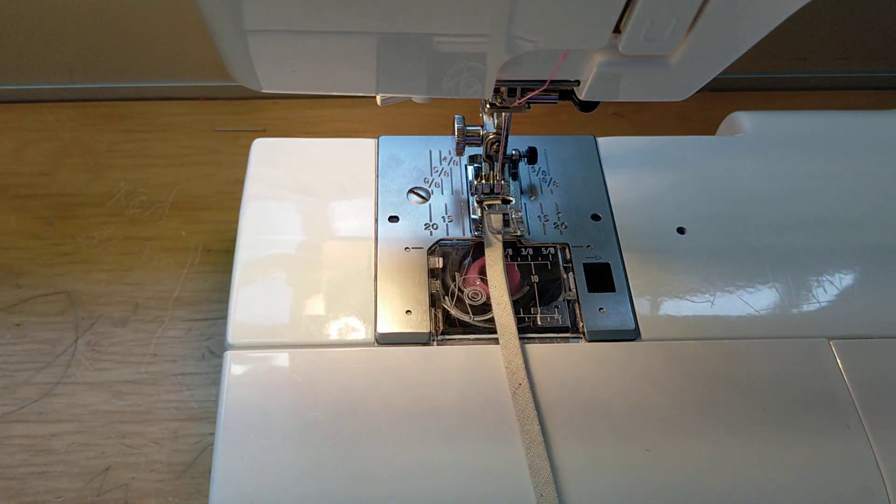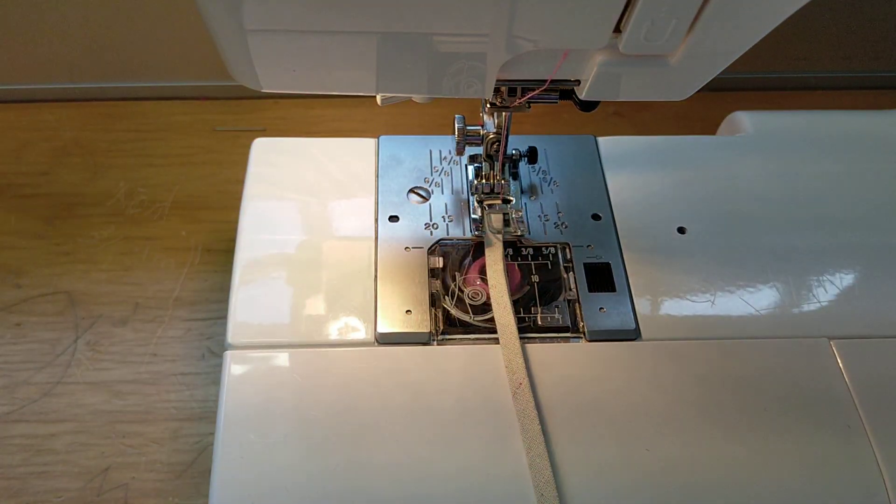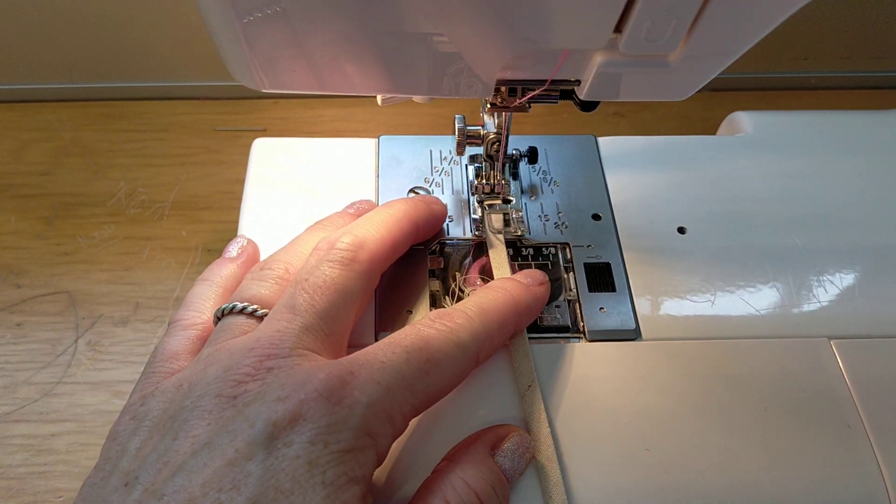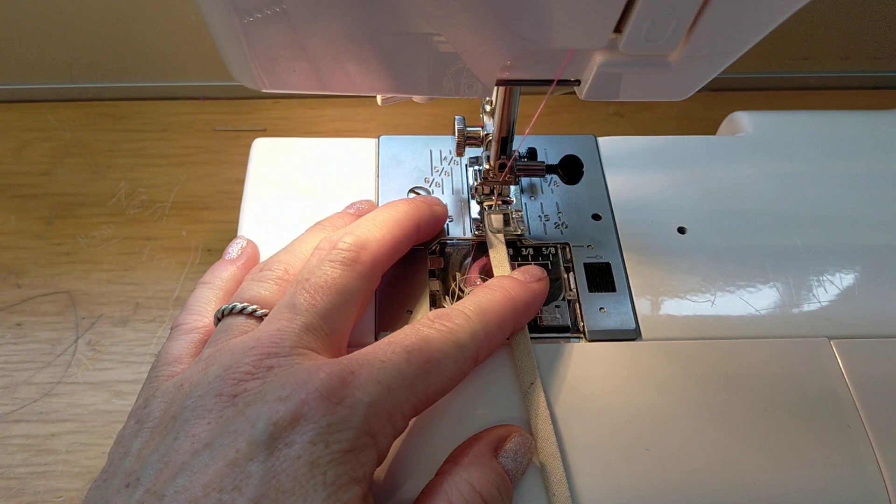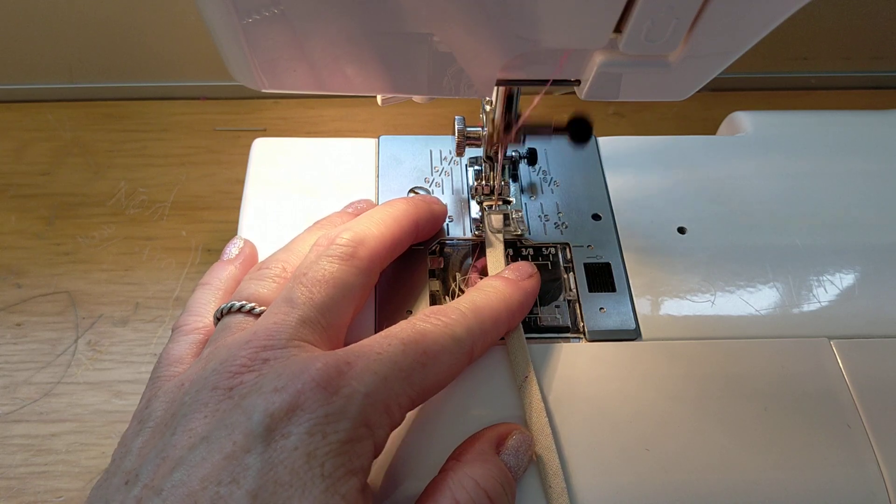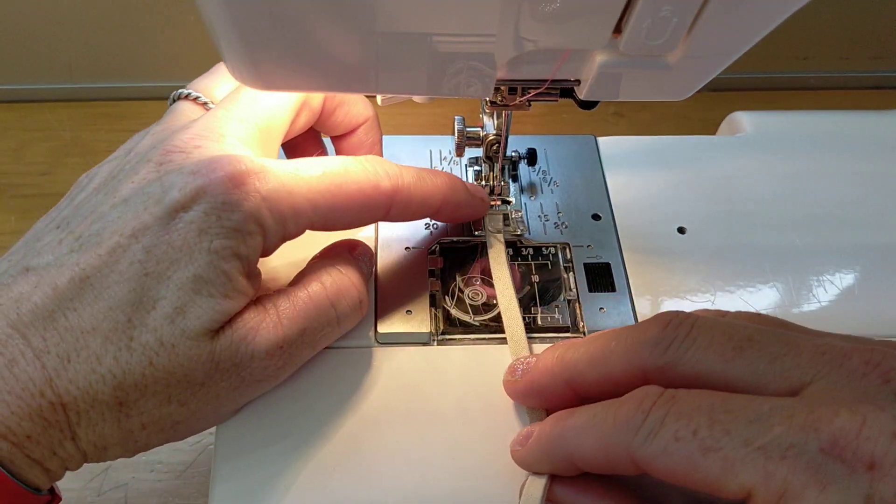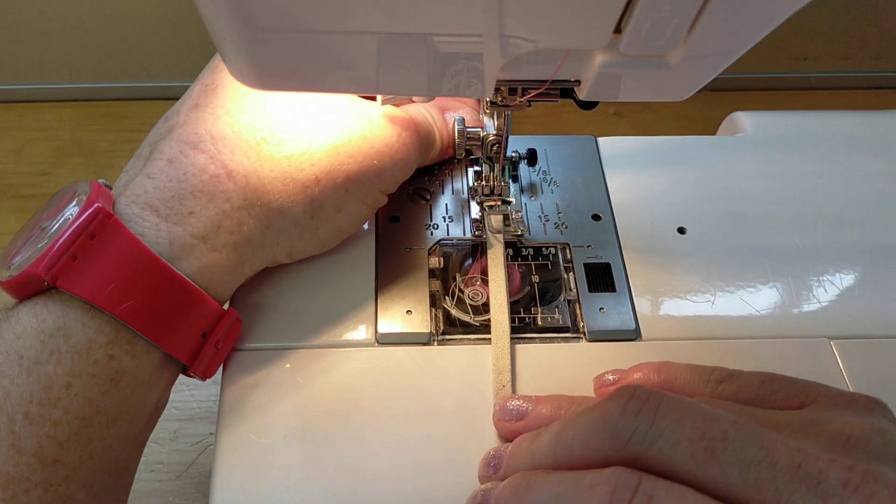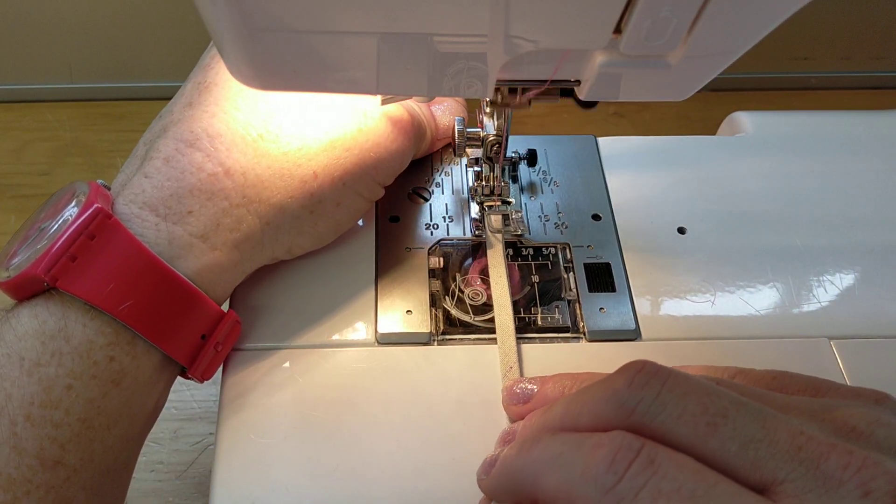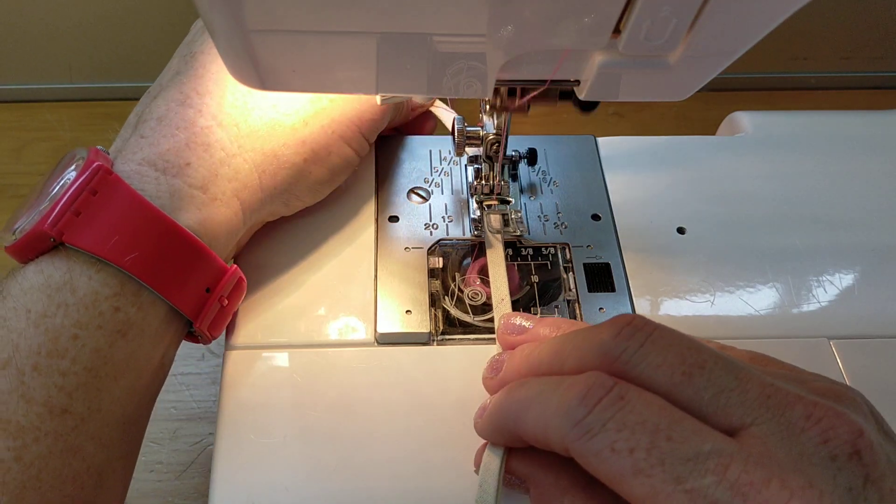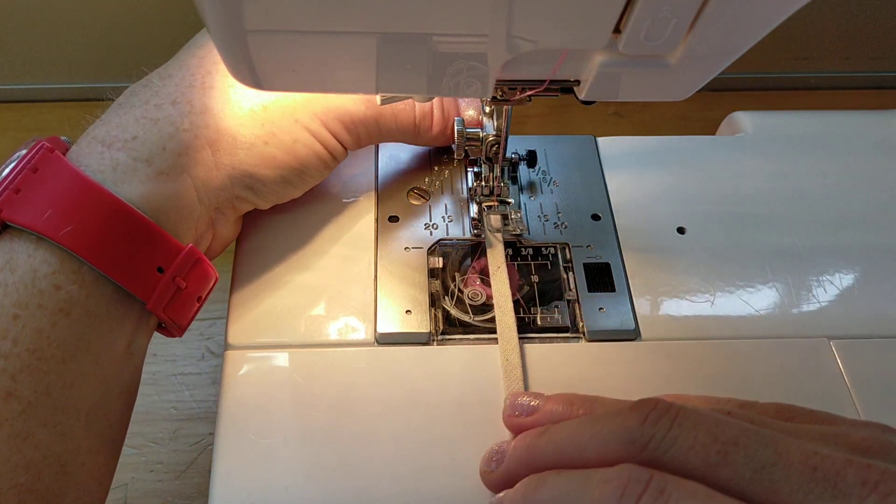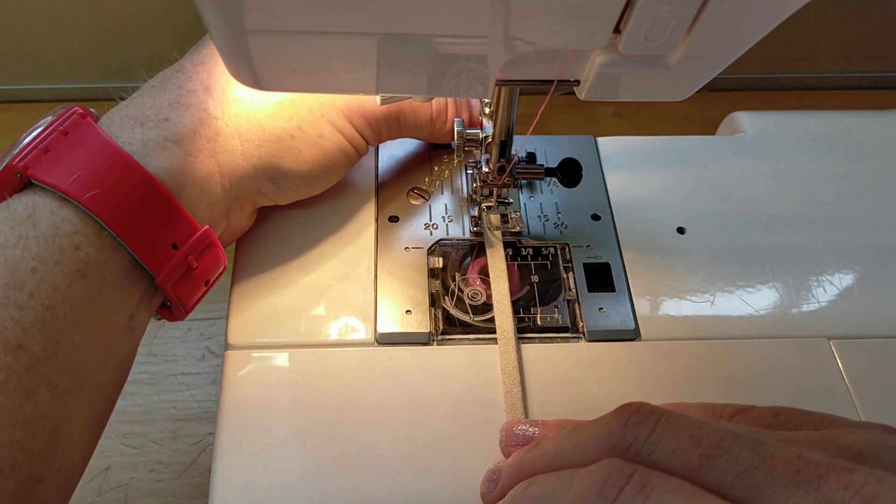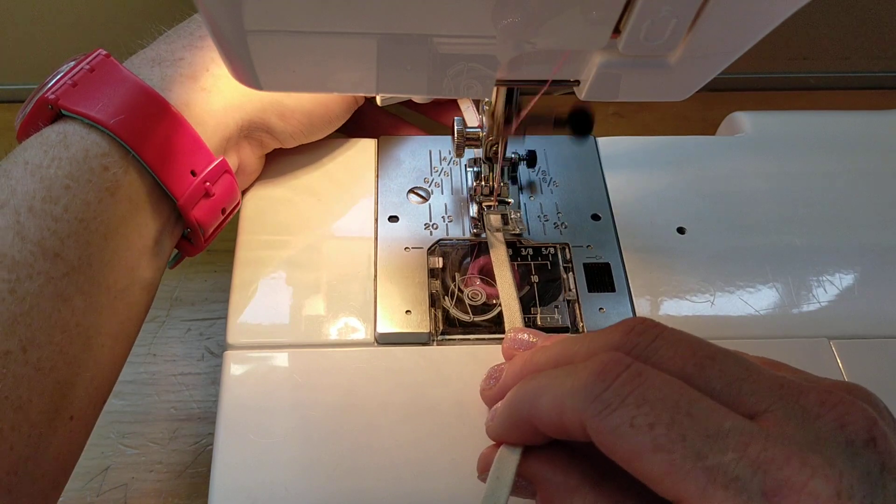And of course, we'll start with a little reverse. Work out where on your presser foot you want to line up your strap so it's nice and even. And then you're going to stitch all the way, trying to keep nice and close to those folded edges.